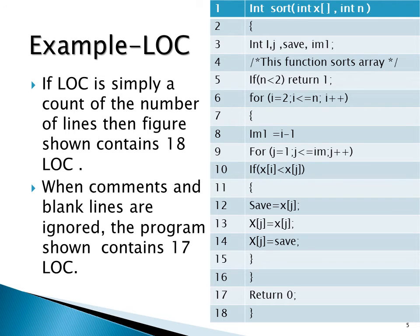In this example, the total number of lines is 18, but when we ignore the comments and blank lines, the program contains 17 LOC. Most researchers agree that the LOC metric should not include comments or blank lines, since these are really internal documentation and their presence or absence doesn't affect the functions of the program.